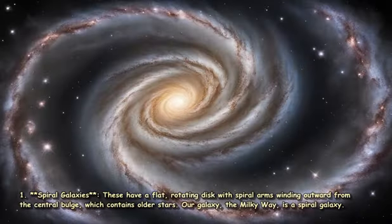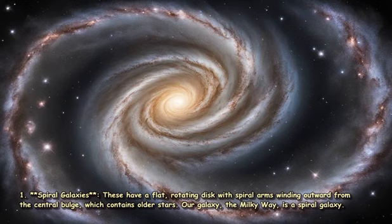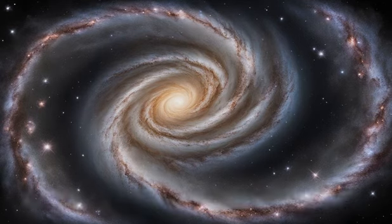1. Spiral galaxies: These have a flat, rotating disc with spiral arms winding outward from the central bulge, which contains older stars. Our galaxy, the Milky Way, is a spiral galaxy.